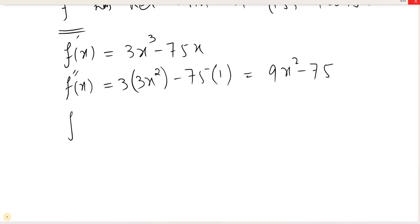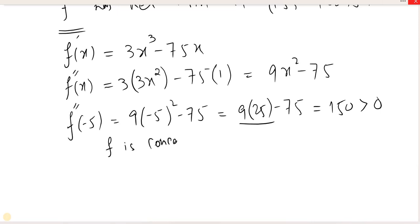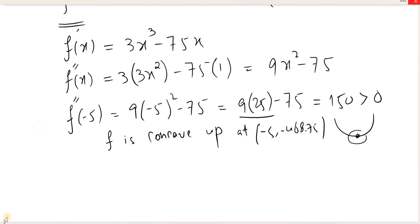Ab critical points hamne already nikal chuki hain, unko one by one iske andar put kar de. X ki jagah pe minus 5, to yeh jaega 9 times 25 minus 75. Ab obviously yahan se value hai ki wo greater hogi 75 se, to answer positive aana chahiye. The answer is 150, which is positive. So yahan pe function kya hai, f is concave up at kis point ki upar? Minus 5, minus 468.75. Iske matlab yahan pe kya hai, agar is point ki upar concave up hai, yeh wali situation hai, to konsa wala point hota hai, relative minimum, jo ke ham upar bata chuke hain.